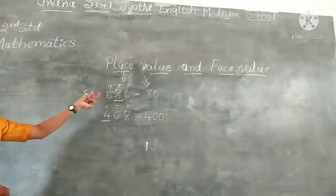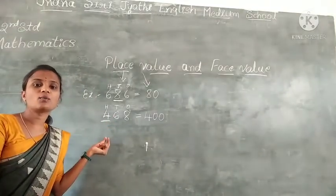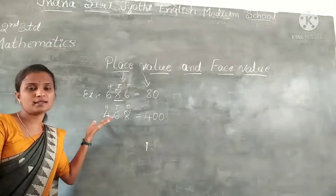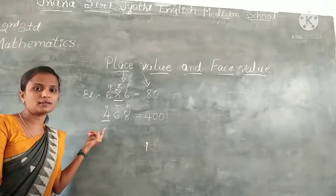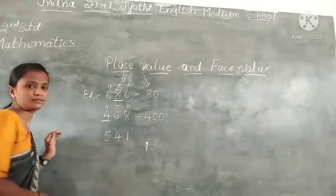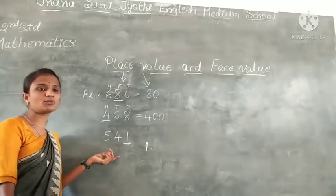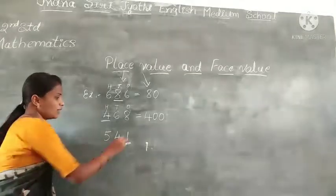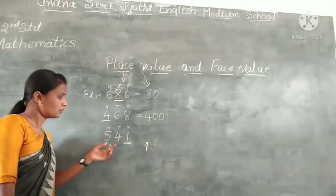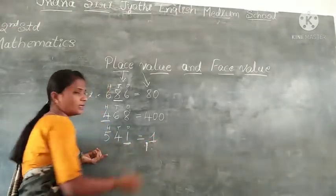Children, keenly observe here. You have to recognize the place of the digit — 541. 1 is in the 1's place, 4 is in the 10's place, and 5 is in the 100's place. So 1 is in the 1's place. That's why you simply write 1. That is the place value of 1.